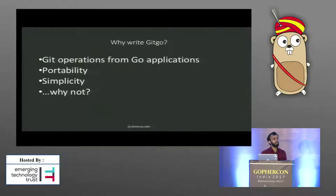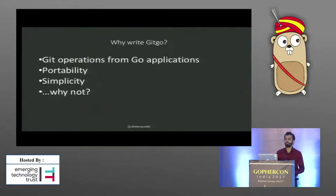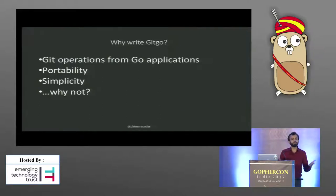Rewriting Git in Go gives us a tremendous opportunity to transcend some of the limitations of C, and to rethink the design of the software and, therefore, to rethink what we can even do with it.